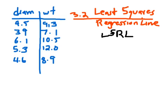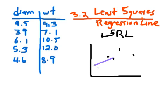The least squares regression line is the line of best fit. Let's do an example — I've got data from last time: diameter and weight of various melons. If you made a scatter plot with only five points, the least squares regression line would be the line that has the best attempt to fit this data. These points are not in a perfectly straight line, so if you fit it the best you can, it ends up looking something like a purple line — that would be the line of best fit.